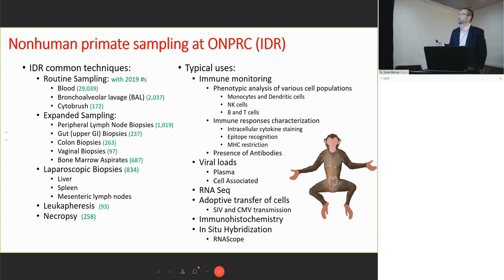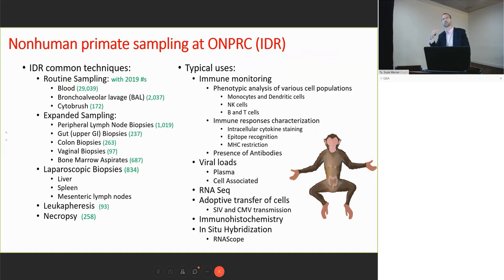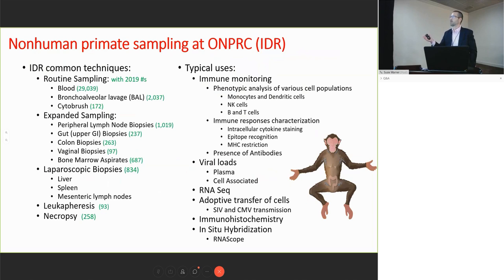These are the types of samples that we commonly do—not an exhaustive list, but some of the most common ones, with projected numbers we're likely to hit in 2019 based on year-to-date sampling. We do a lot of blood sampling, a lot of BALs—a great source of effector memory T cells. We do a little bit of cytobrush sampling; I'll talk more about the utility of that. Peripheral lymph nodes—mostly axillary and inguinal—and some submandibular sampling for those interested in oral mucosa. Upper GI biopsies: endoscopic duodenal pinch biopsies. Colon biopsies, where we go in with a speculum about 8 to 12 centimeters in to get that distal descending colon, the area commonly covered by our challenge.